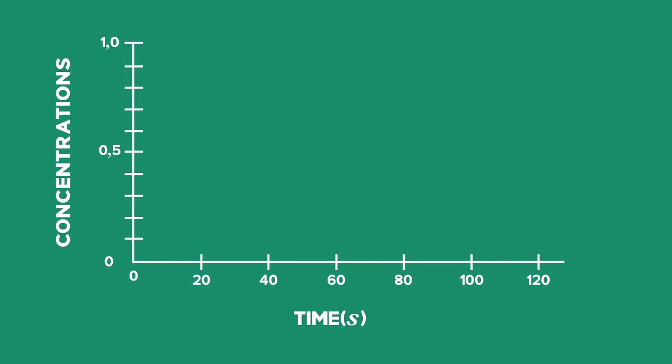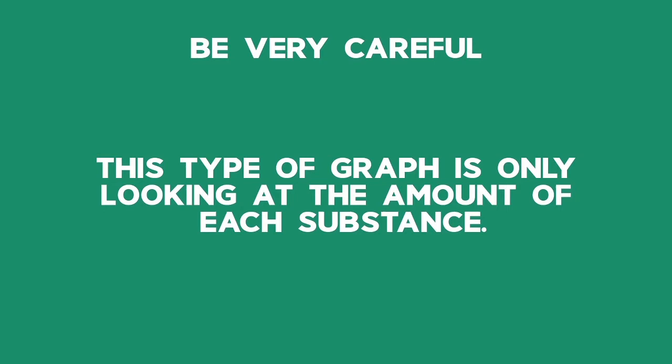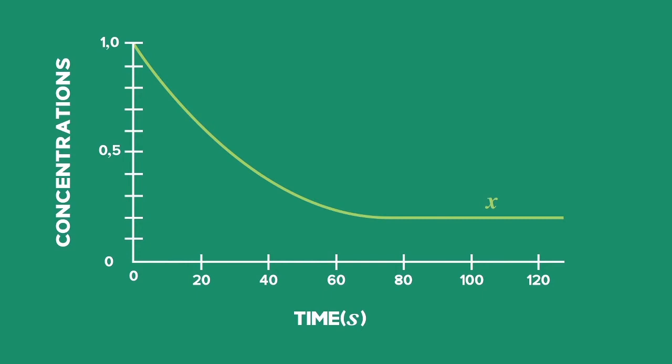We can also plot the concentration of each substance involved in a chemical reaction against time. Be very careful because these graphs can look a lot like the rate graphs we've just studied. This type of graph is only looking at the amount of each substance. Here we see that reactant X is decreasing while product Y is made. Since this reaction is reversible, when Y is produced from X, they may react to form X from Y again using the reverse reaction.